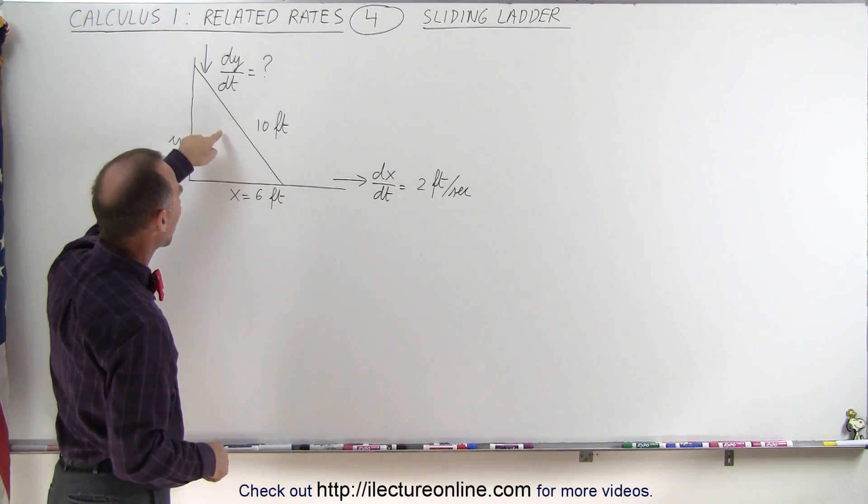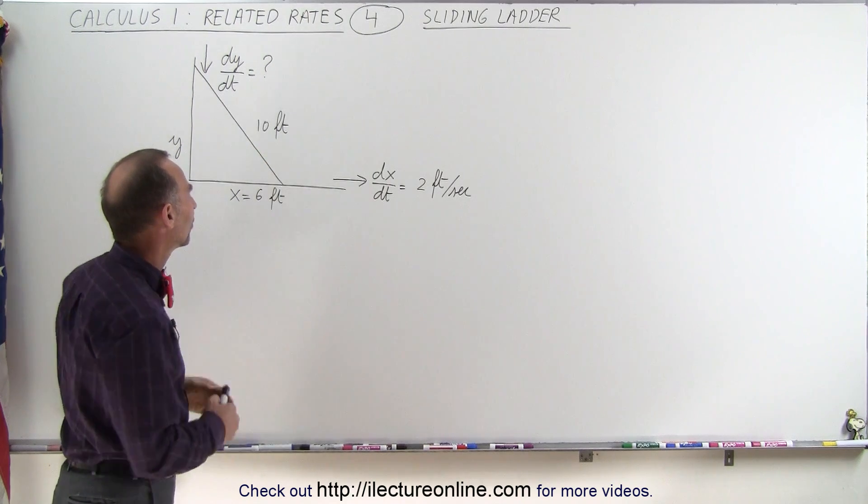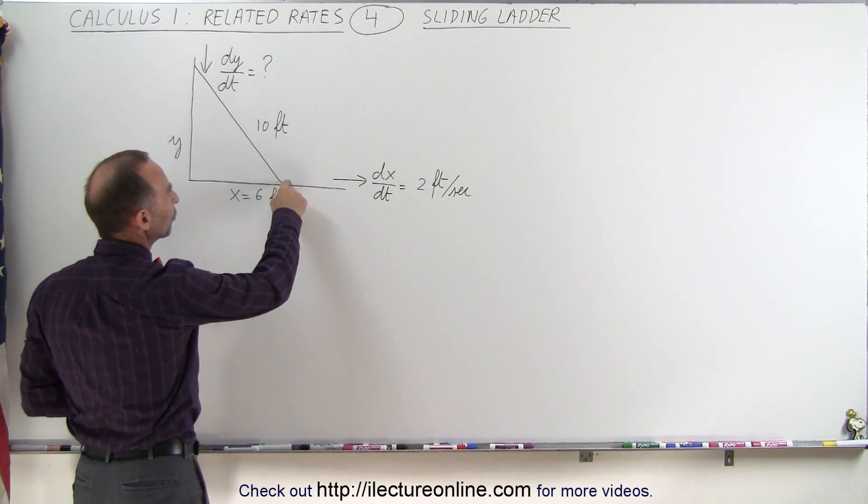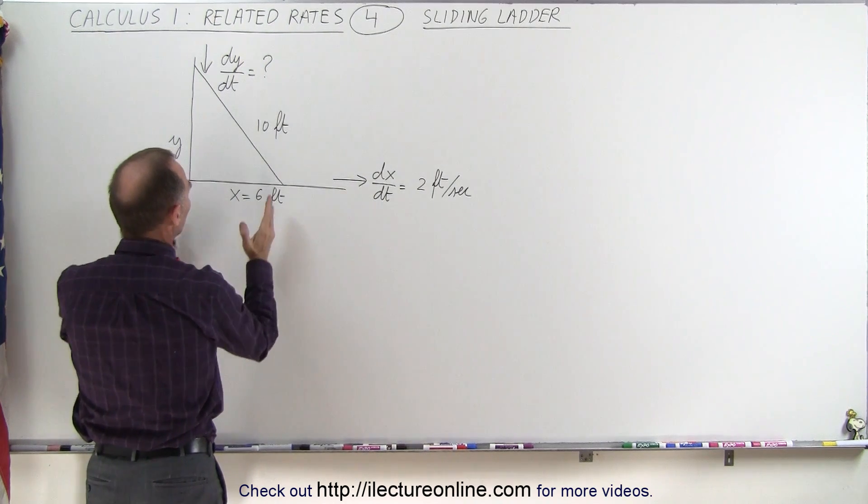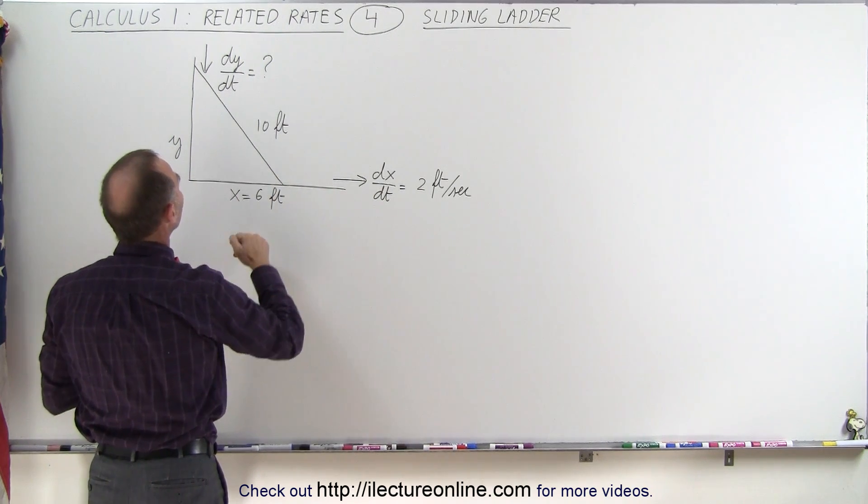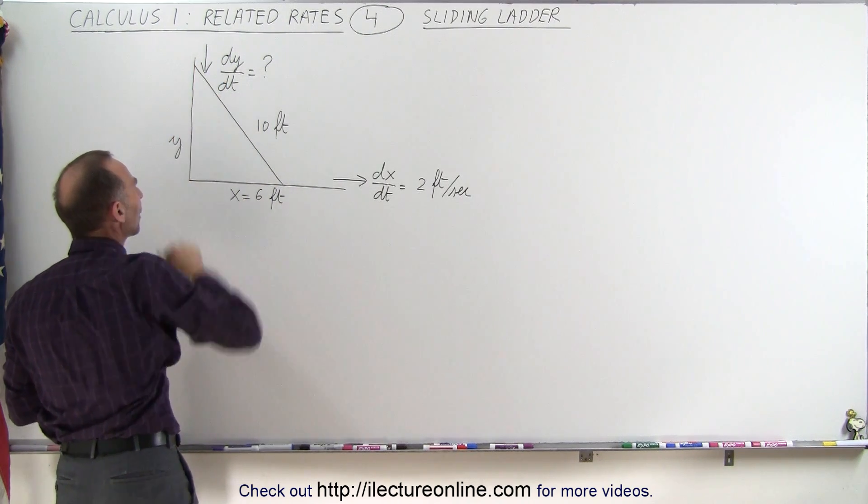Here we have a ladder that's 10 feet long leaning up against the wall and sliding. The bottom is moving away from the wall at 2 feet per second. It's currently 6 feet away from the wall, and we're trying to figure out how fast the top part of the ladder is sliding downward.